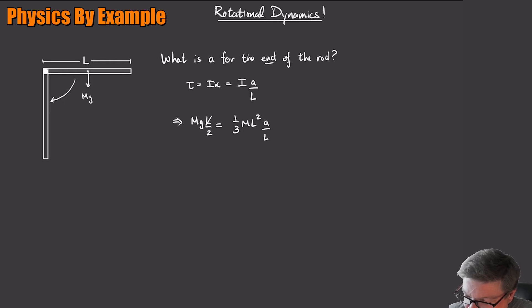So once again, all the L's go away, and then I can solve for A. So the acceleration of that endpoint, it looks like it's going to be, let's see, the mass cancels too, right? So it's just going to be 3G over 2, 3 halves G, 1.5 G.